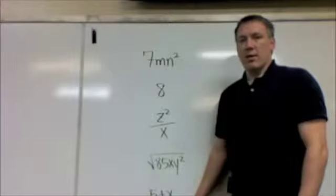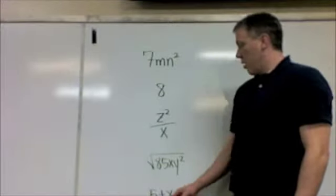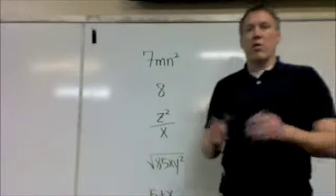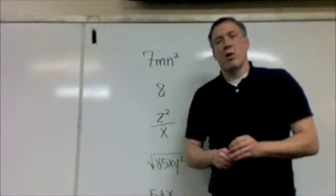5 plus x. Because of the plus, all the others have no addition or subtraction. Right now we would consider them a monomial.